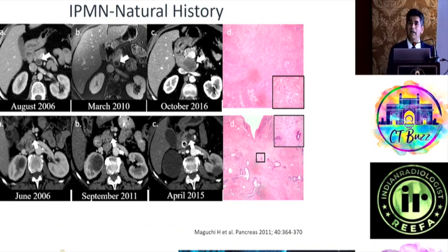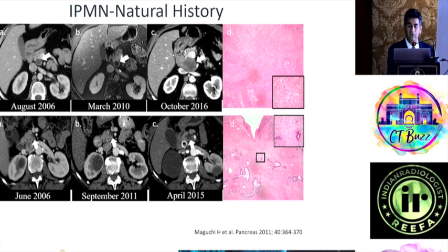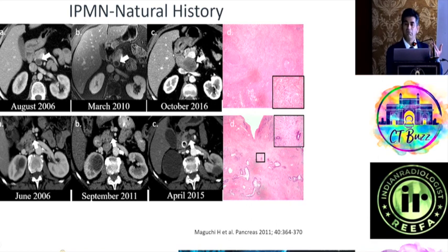Let's look at two cases to illustrate this. In August 2006, a patient with side branch IPMN showed a unilocular cyst with a slightly thick wall. From 2006 to 2010 there was minimal change, with a slightly thicker wall. By 2016, there was invasive cancer, which was still resectable because the vessels were not involved. That illustrates the slow progression of IPMN — there is a wide safety window to capture these tumors early.